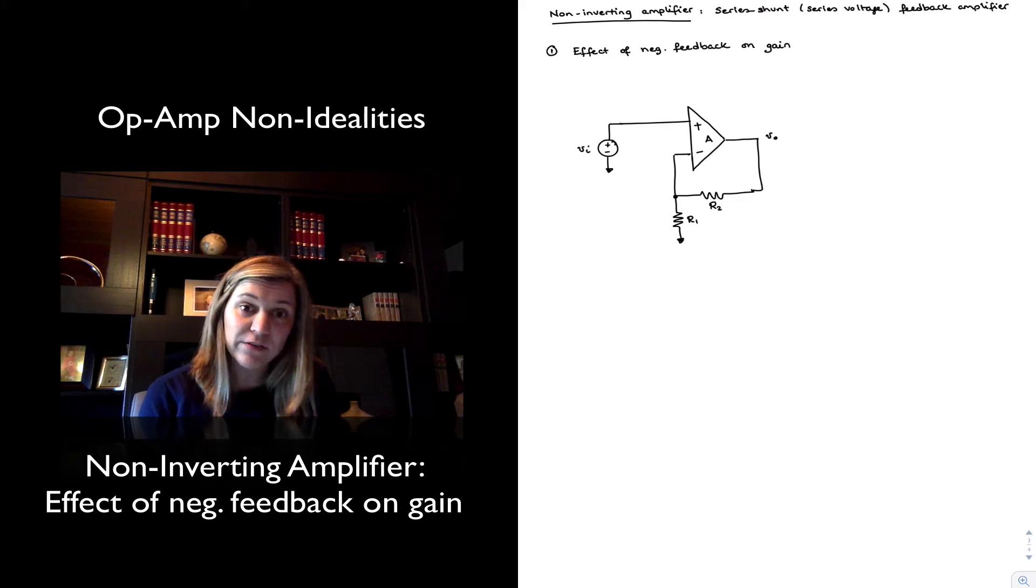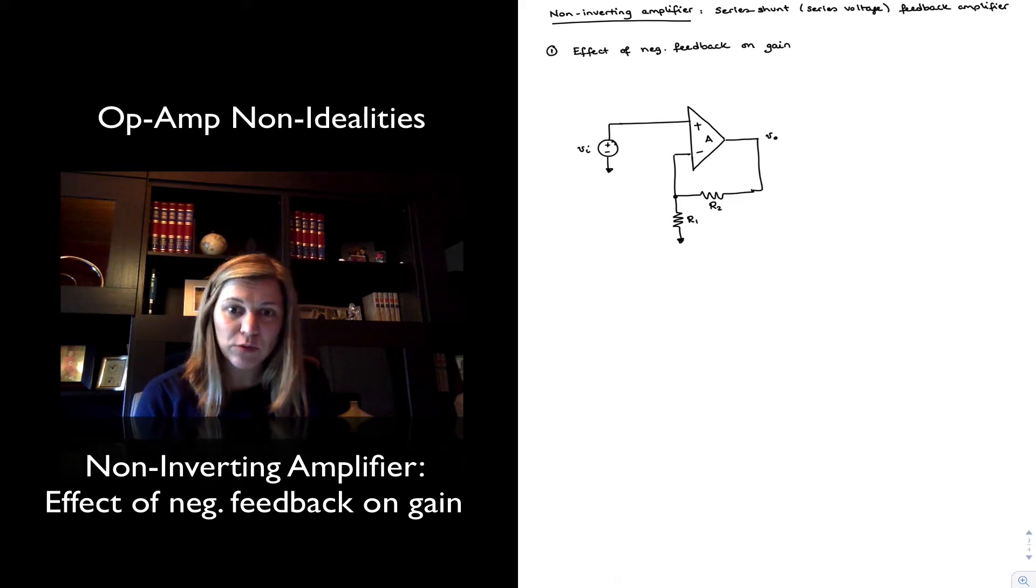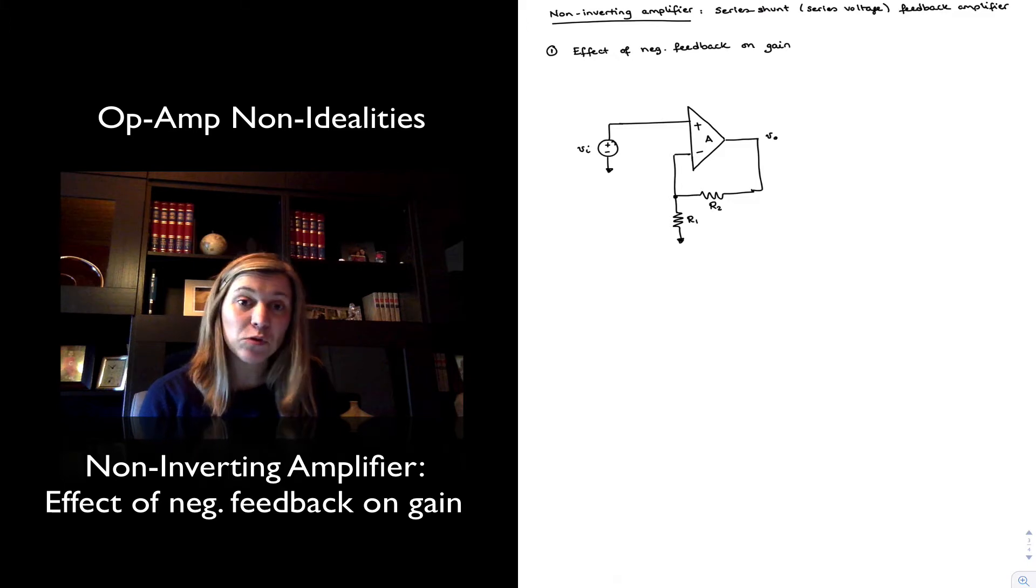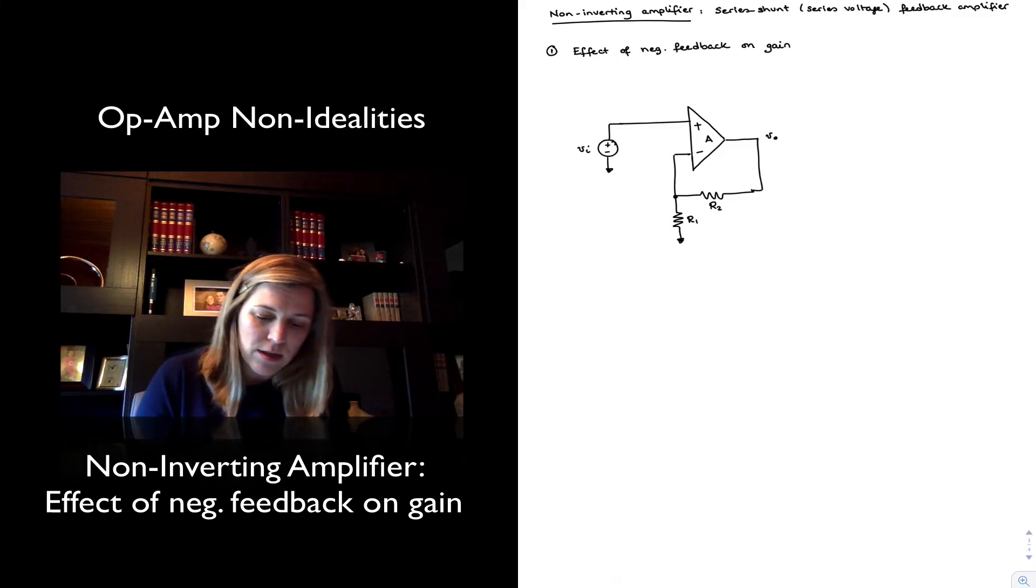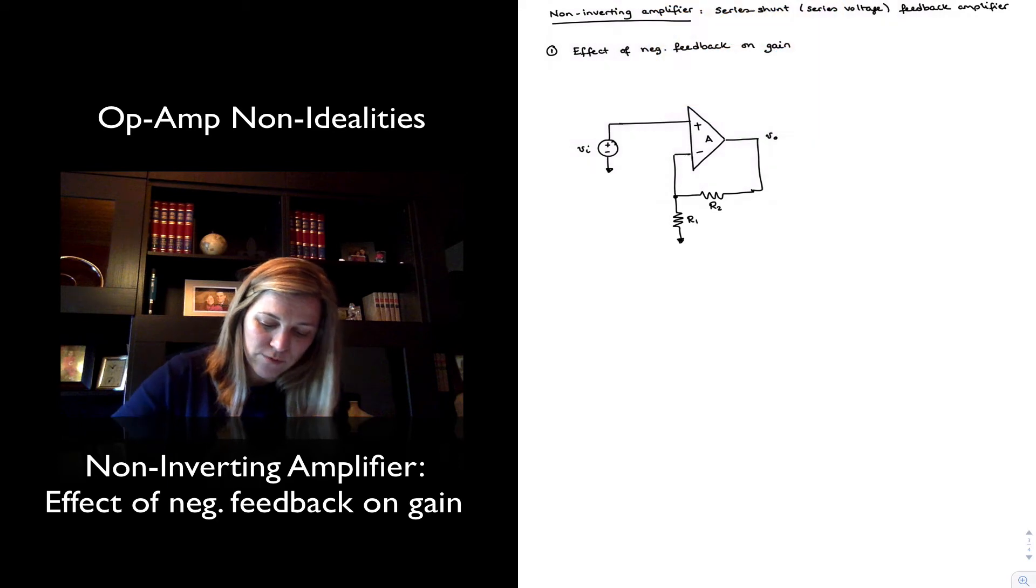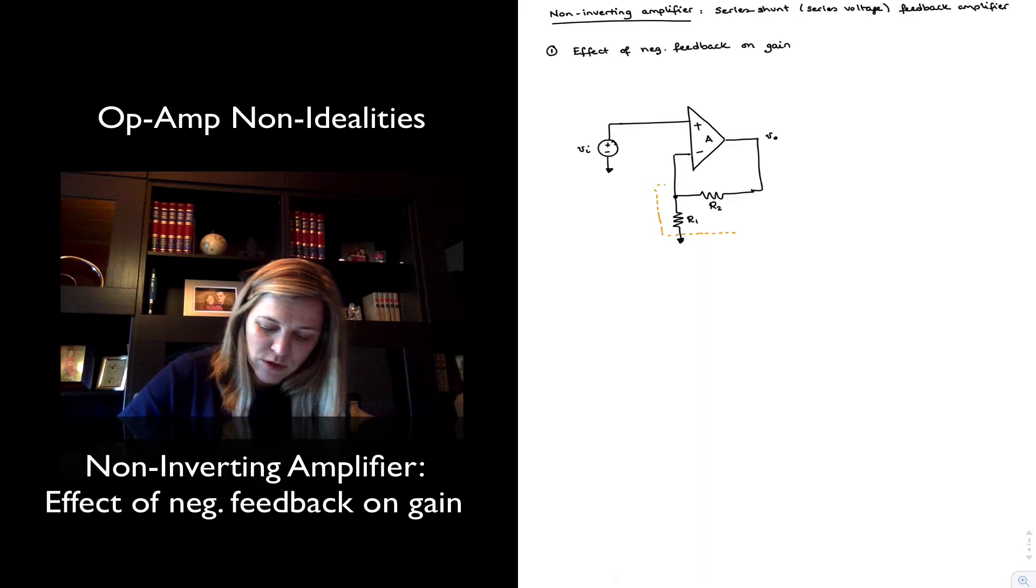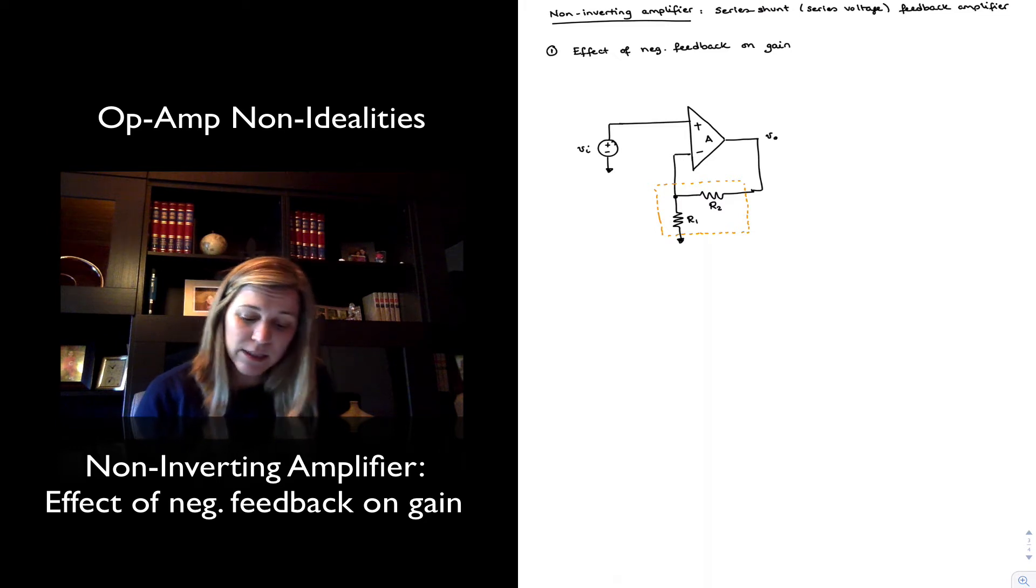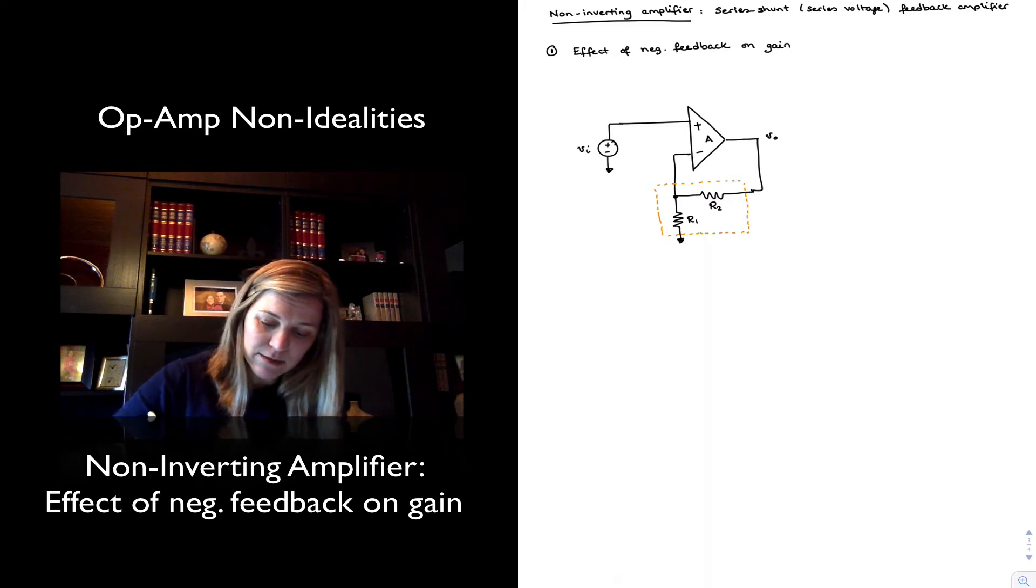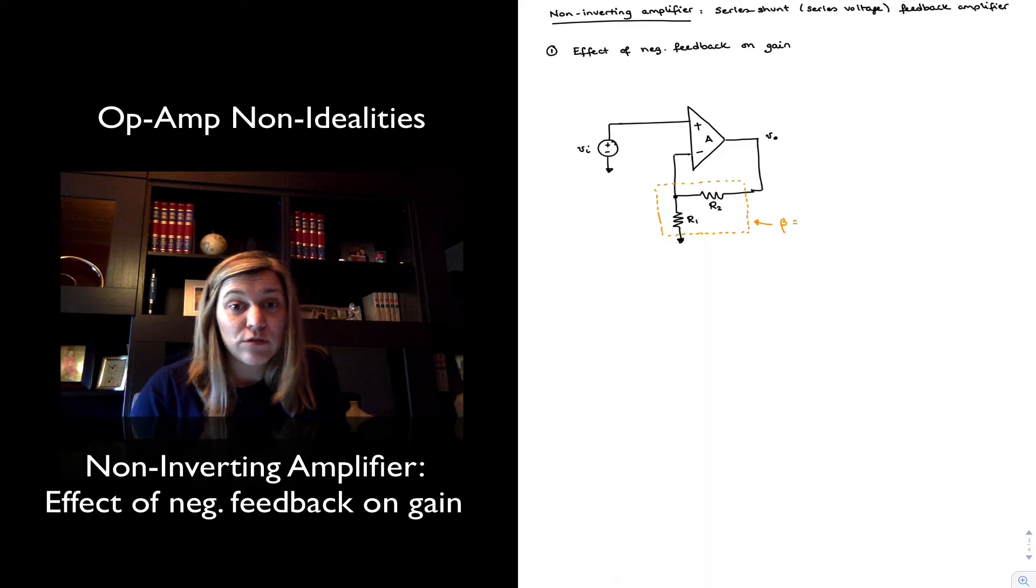I have my non-inverting amplifier input signal being fed into the non-inverting input terminal. I have my feedback network comprised of resistors R1 and R2. I'm going to draw a little box around my feedback network so that we understand this is what I have previously labeled as beta. In this case, my beta is basically the gain factor of the feedback network.